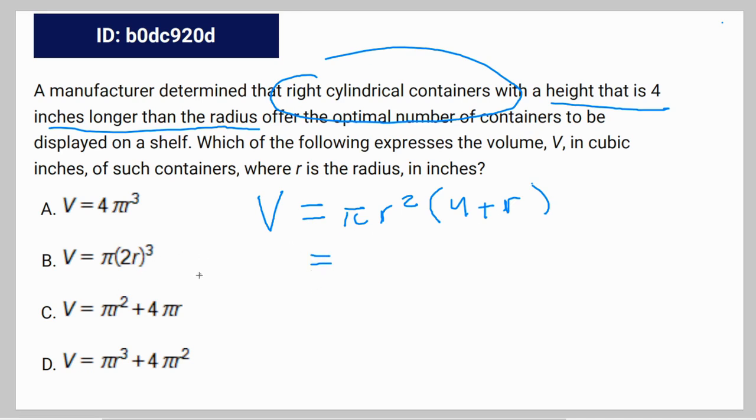And to actually put this in the terms that they give us in the multiple choice options, it would be π r² times 4, so 4π r², plus π r³. Which is what D is giving us, so D is the answer.